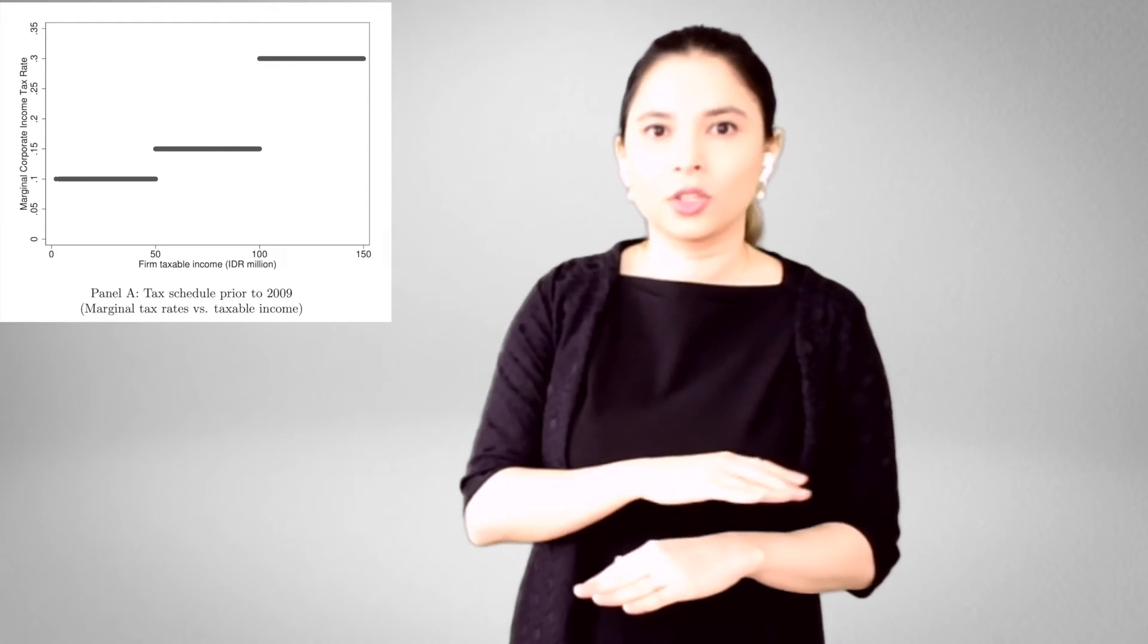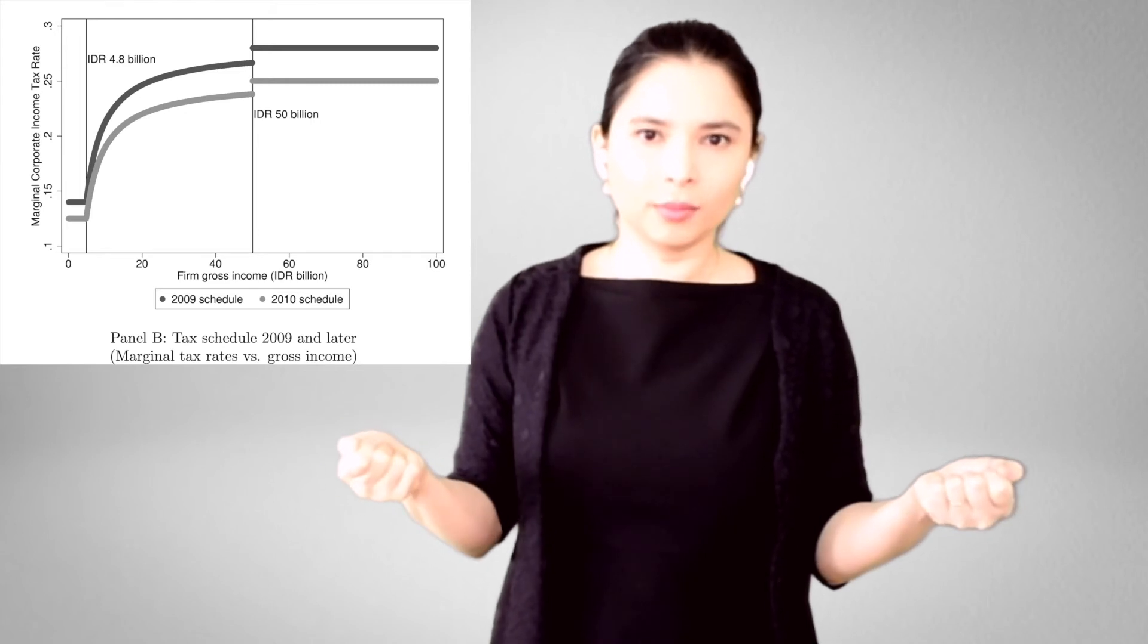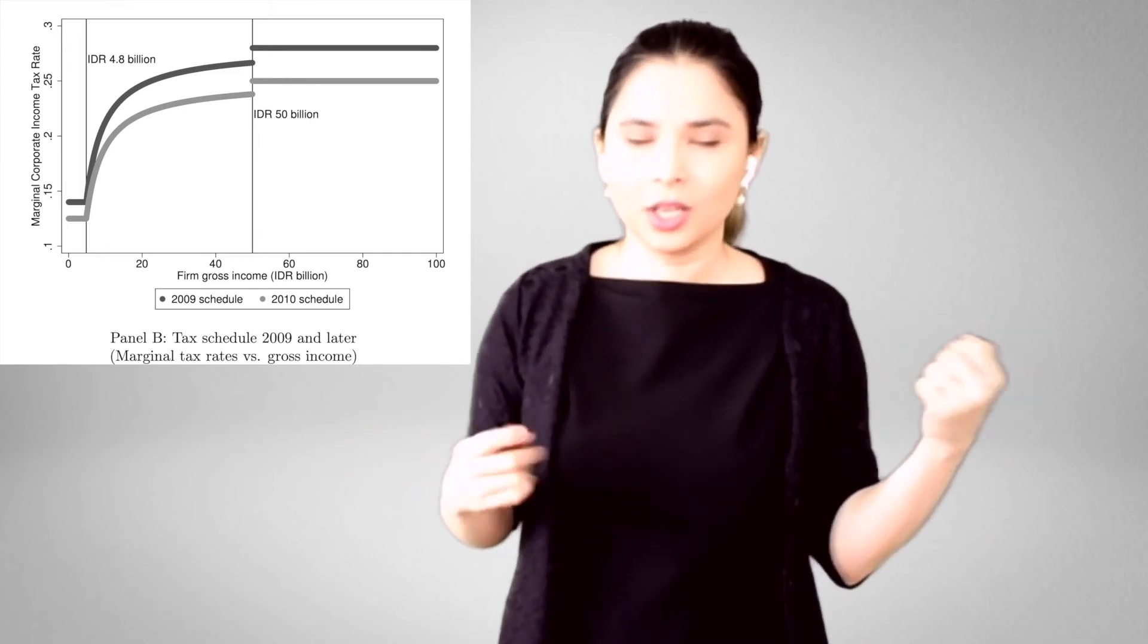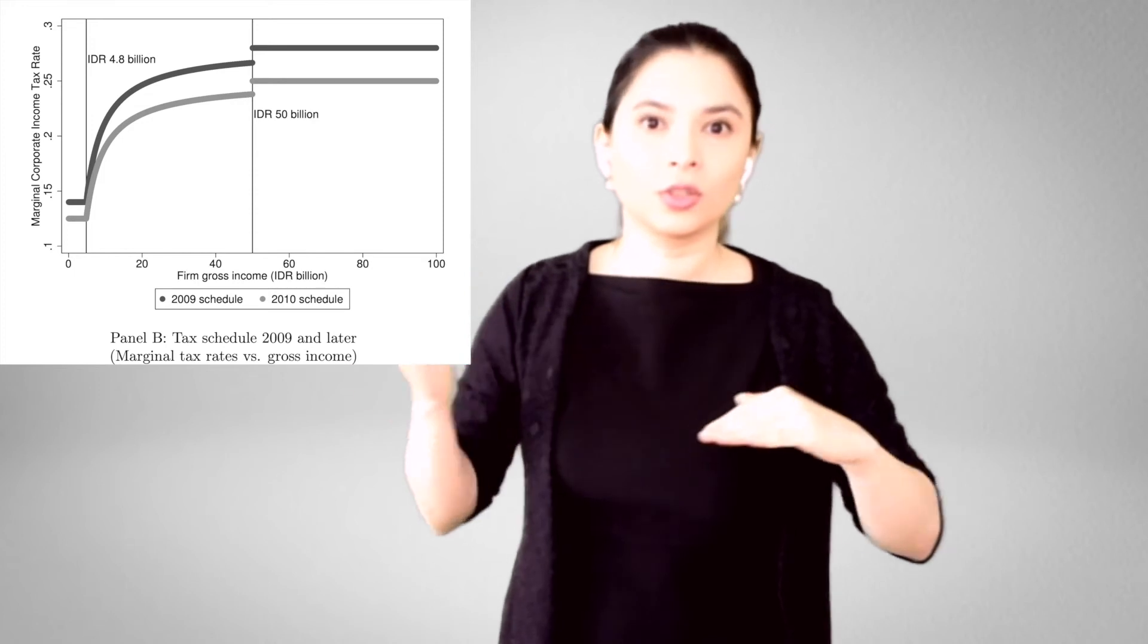Let's put that aside. The second reform we study was a complete restructuring that Indonesia did of its corporate income tax rate schedule - the marginal tax rate schedule faced by corporate income taxpayers. In 2009, Indonesia did a complete restructuring of the schedule. The schedule used to be three tiers based on taxable income. And the top tax rate was 30%. In 2009, Indonesia changes this. The marginal tax rate is no longer going to be a function of taxable income. It's a function of gross income now. So, it's essentially a flat rate, but with discounts based on your gross income.